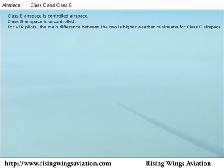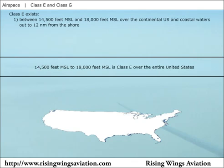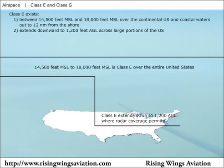Class E airspace exists in a number of places. The airspace from 14,500 feet above sea level up to 18,000 feet above sea level across the continental United States and coastal waters out to 12 nautical miles is all Class E. This lower limit of 14,500 feet above sea level is extended downward to 1,200 feet above the ground across widespread areas of the United States based on radar coverage.